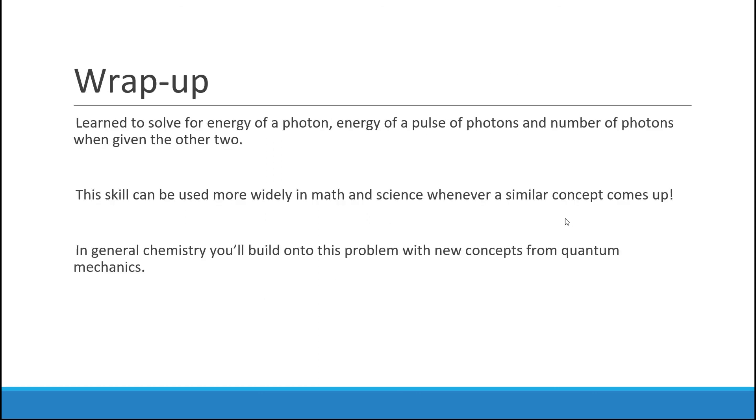In this video, we discussed using our definitions and intuitive understanding of multiplication and division more purposefully to solve for quantum problems involving total energy, energy of a photon, and the number of photons. Whenever we have two of these three, we can solve for the other. As you move into chemistry, you'll learn a lot of new topics in quantum mechanics and beyond where you're going to want to be able to use this skill. For example, we might give you the wavelength or frequency, and then you're going to use that to solve for energy of a photon, which then you can use to solve a problem just like what we did here. So please come back and visit this video whenever you need to revisit this topic.